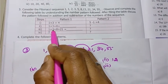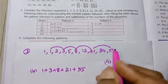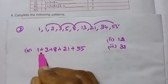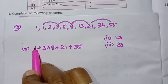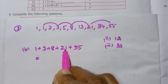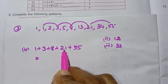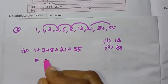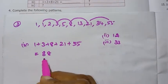So the second answer is 12 and the third answer is 33. For the fourth one, add all: 8 plus 1 is 9, then 10, 11, 12, then 21, 31, 33, and the total sum with 55 added gives 88. So the answers are: first is 4, second is 12, third is 33, fourth is 88.